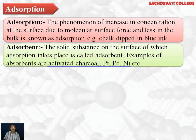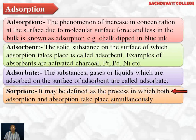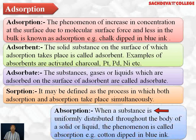The substances — gases or liquids — which are adsorbed on the surface of an adsorbent are called adsorbate. Sorption is the process in which both adsorption and absorption take place simultaneously — for example, dyeing of cotton fibers. When you dye a cotton fiber, the dye is adsorbed on the surface of the cotton, but once adsorbed it becomes uniform throughout; this mixture of adsorption and absorption together is called sorption. Absorption is when a substance is uniformly distributed throughout the body of a solid or liquid.